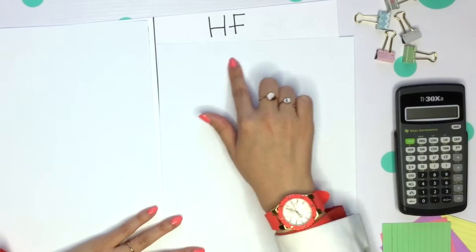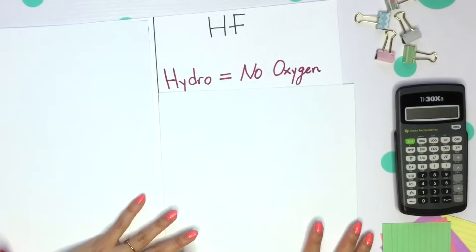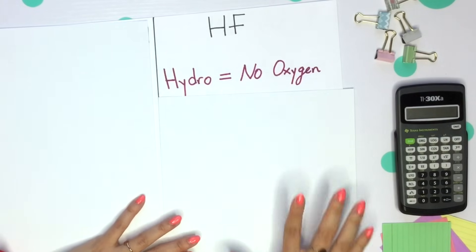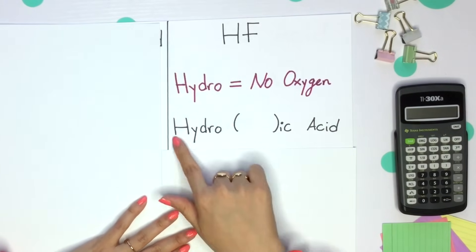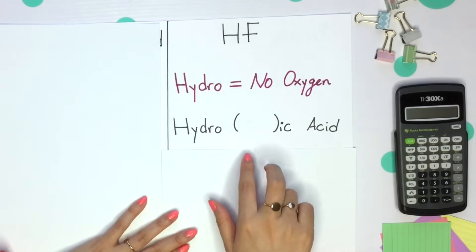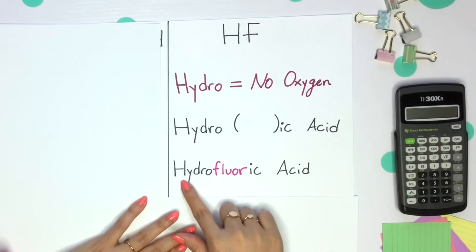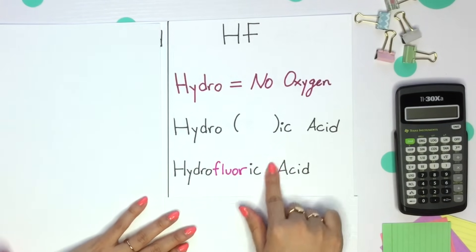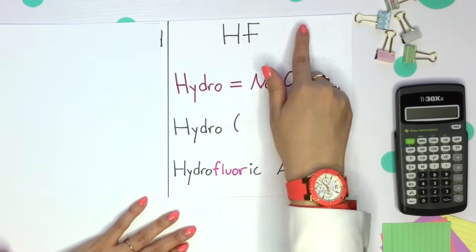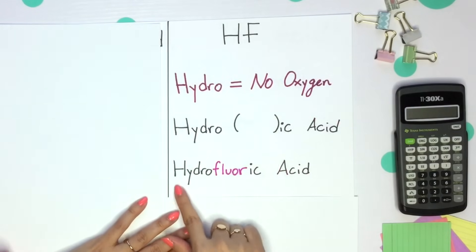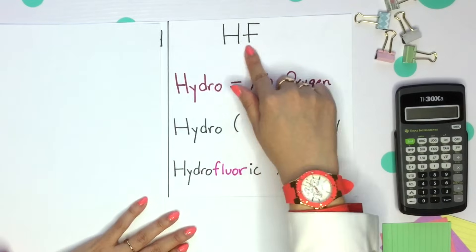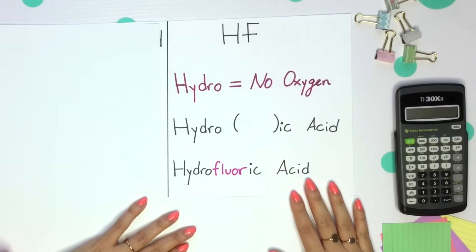Let's go in reverse. If you're given a chemical formula and asked for the acid's name, we have HF. There is no oxygen, so that tells us hydro — our prefix is hydro. We'll take this setup, placing our root name of the element, fluorine, and you get hydrofluoric acid. The acid tells us hydrogen in front; there is no oxygen, that's why it's hydro; and fluoric just tells us it's fluorine.